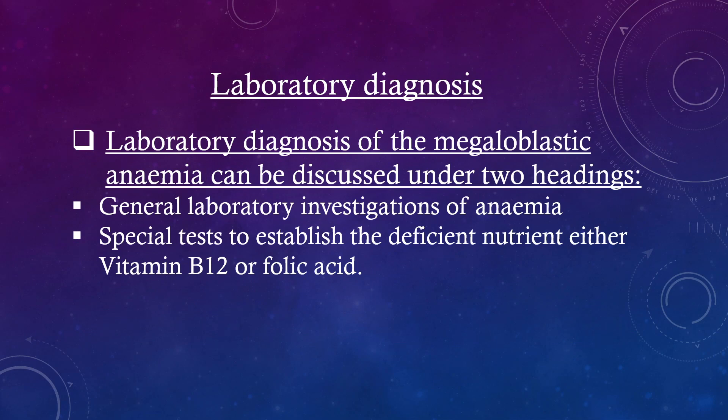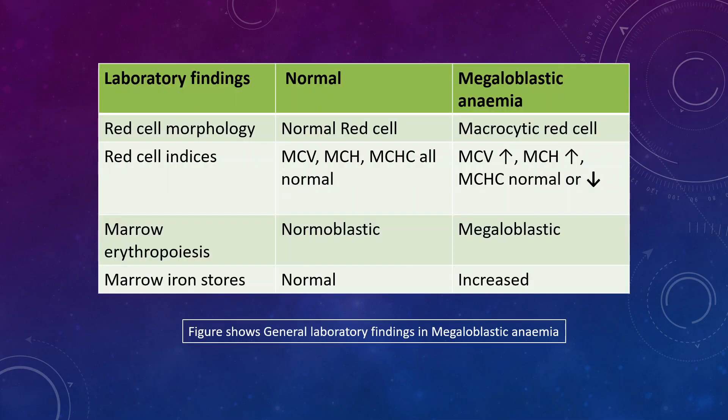Laboratory diagnosis of megaloblastic anemia is discussed under two headings: general laboratory investigations of anemia, and special tests to establish the deficient nutrient — either vitamin B12 or folic acid. Red cell morphology shows macrocytic red cells; MCV is increased, MCH is increased, and MCHC is normal or decreased. Marrow erythropoiesis is megaloblastic and marrow iron stores are also increased.